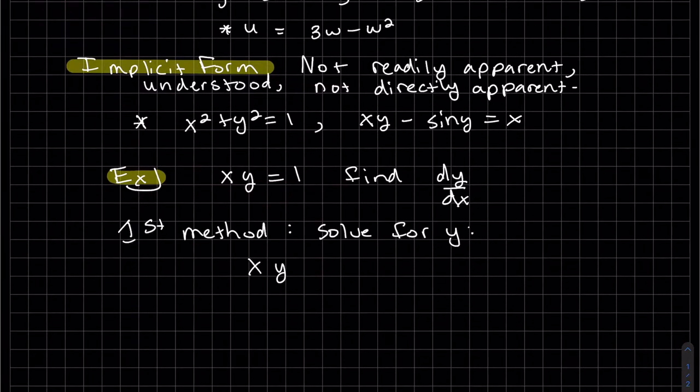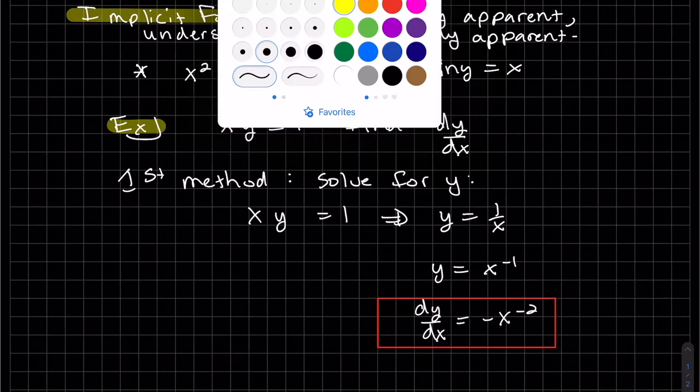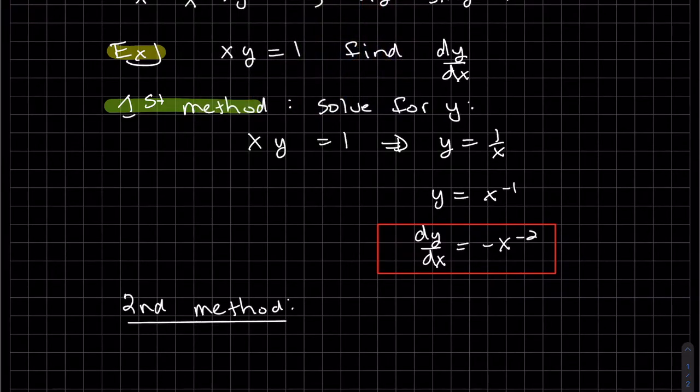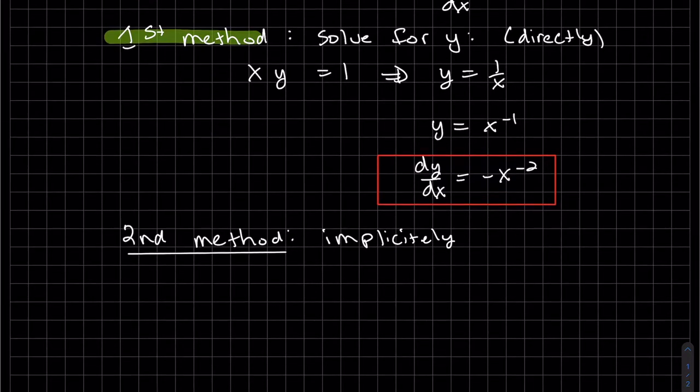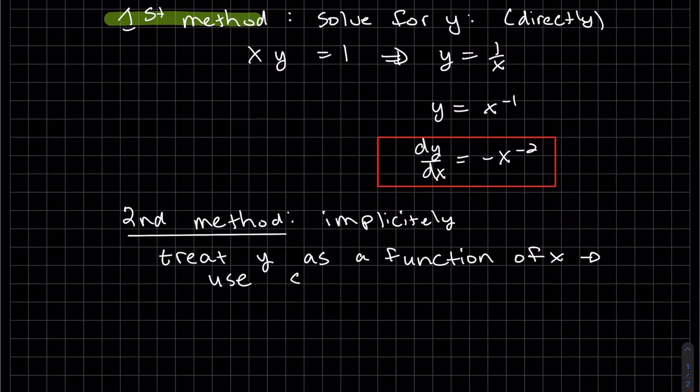So easily enough, this is directly or explicitly and this is implicitly. What we do here is we're going to treat y as a function of x. We can see it is, we just did it. Y is a function of x, and then we're going to use the chain rule when we come across it.